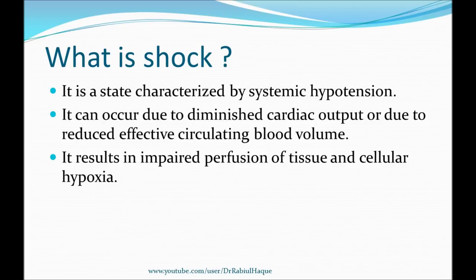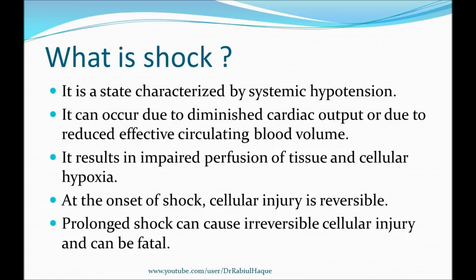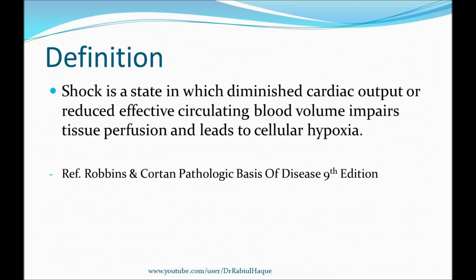The next basic thing is that shock will result in impaired tissue perfusion and that will cause cellular hypoxia. Initially, cell injury happening as a result of shock will be reversible. However, if shock persists for a prolonged period of time, that can cause irreversible cell injury and it can even be fatal. So shock can be defined as a state in which diminished cardiac output or reduced effective circulating blood volume impairs tissue perfusion and leads to cellular hypoxia.